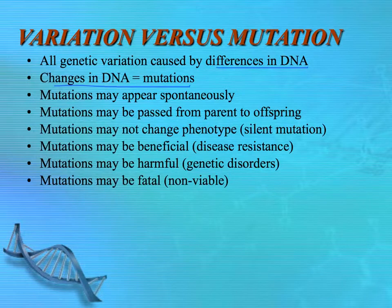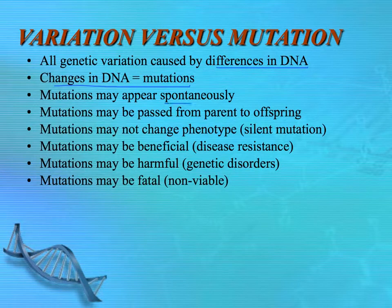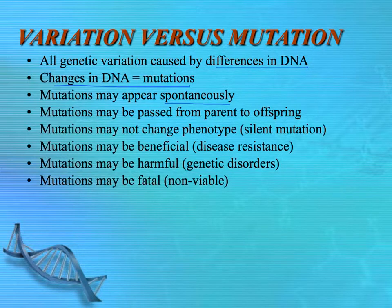From an evolutionary standpoint, there was one original gene that then mutated, giving you a second choice. From a creation standpoint, creatures were created in their own kind, and some of this genetic variation was built in from the very beginning. Mutations may appear spontaneously — they may occur as a gamete undergoes meiosis, or within an organism during mitosis of some cell. Mutations may also be passed on and inherited from parent to offspring, once the mutation has happened in the gamete.